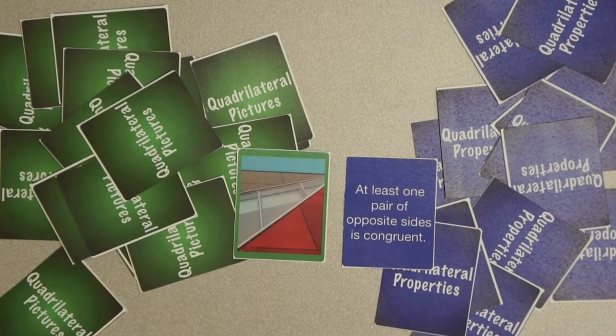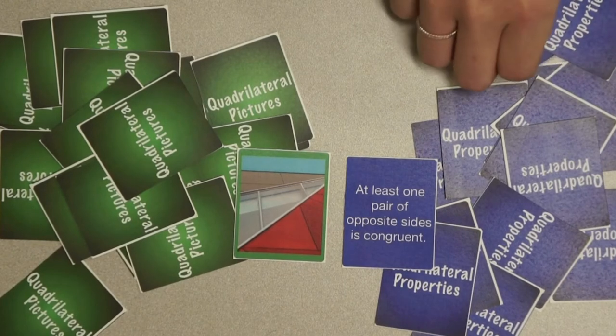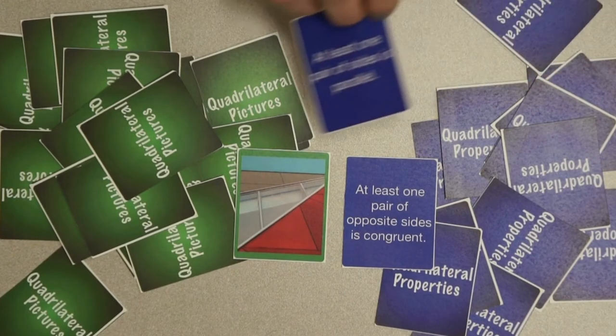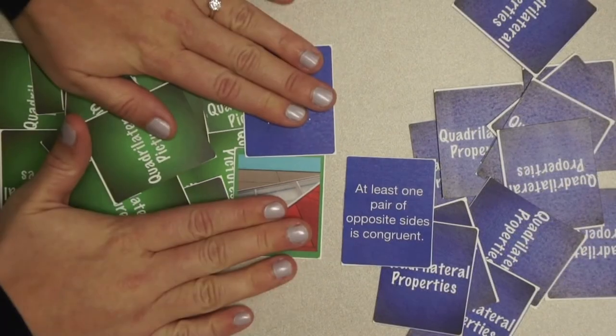In this case, any player can match any existing property card with a quadrilateral picture card, but only one player can make a match on any player's turn.